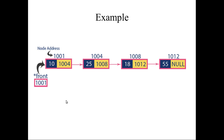In this graphical example, the first node is called the front node or head node. The sequence of data is 10, 25, 18, 55. Node 55 is the last node, so its address field is null. The link field of each node stores the address of the next node, which is shown in the graphical representation of the linked list.